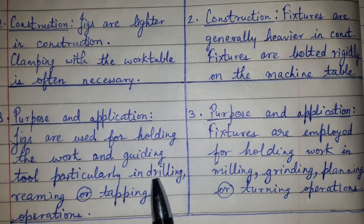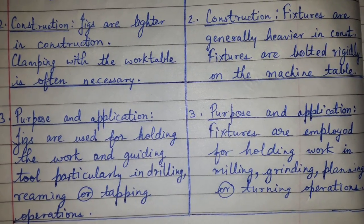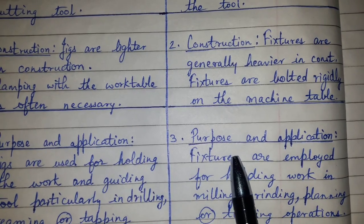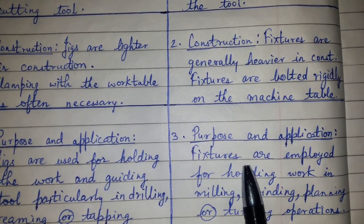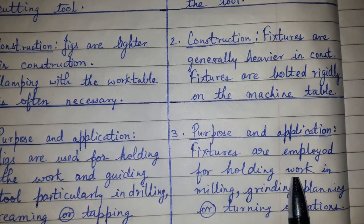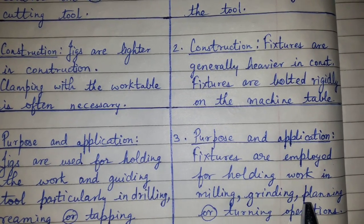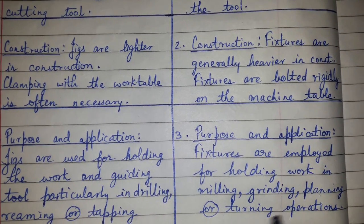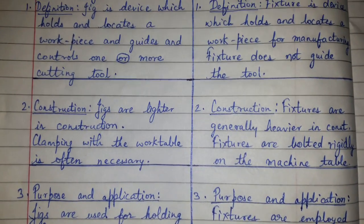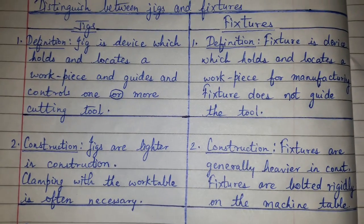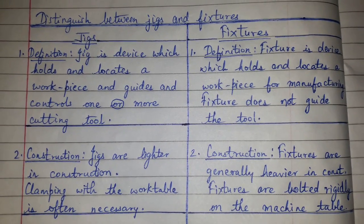In terms of purposes and applications, jigs are used for holding the work and guiding the tool, particularly in drilling, reaming, or tapping operations. Fixtures are employed for holding work in milling, grinding, planing, or turning operations.